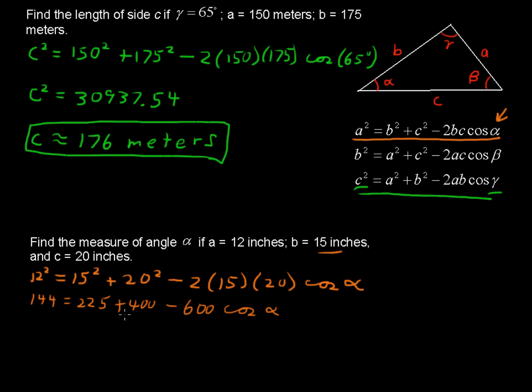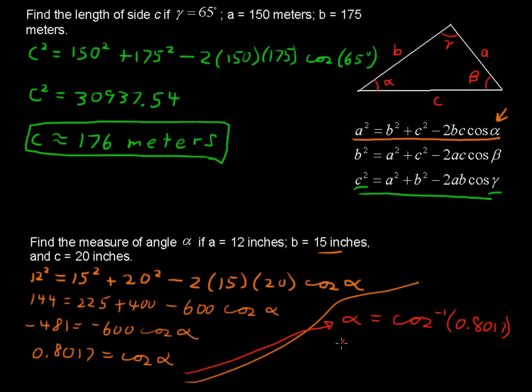Now divide each side by negative 600, and you get 0.8017, and I'm going to bring this right up here, and I'll just change colors. And I will say then that alpha is the inverse cosine. So we're saying cosine of what angle is 0.8017, and the way you find that is saying alpha is the inverse cosine of that number. That's the way the inverse cosine function works. It gives you an angle if you are given a value.